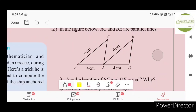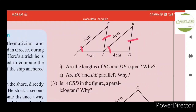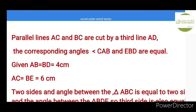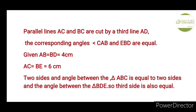The two parallel lines are AC and BE. The three sides are equal to AD. The corresponding angle is the reason. The parallel lines EC and BC are cut by a third line AD. Corresponding angles CAB and EBD are equal. Angle AB equals BD and will equal four centimetres. AC and BE will equal six centimetres.